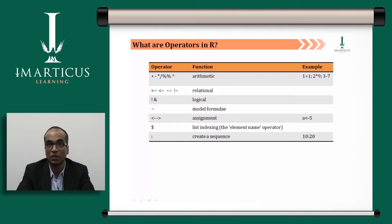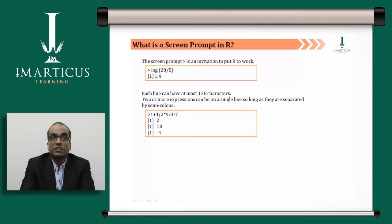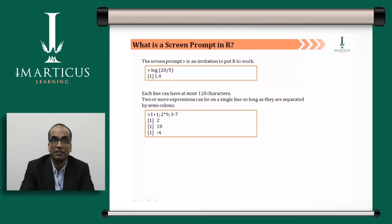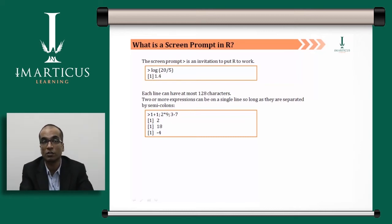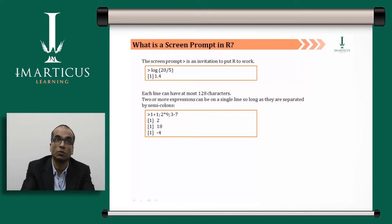The sequence 10:20 includes 10 and 20, giving 11 numbers. In the console window, the greater-than prompt (>) means R is asking for input — that's where you write your code. For example, log(20/5) asks R to compute the natural logarithm of 20/5. Here, log means log to base e, not base 10 or base 2, giving the value 1.4.